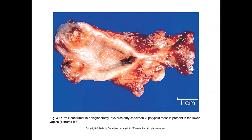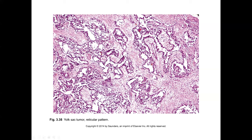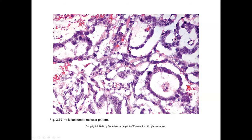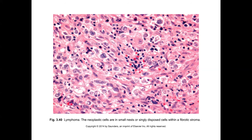Another pediatric tumor that can occur in the vagina is the yolk sac tumor. The morphologies are similar to those seen elsewhere in the gynecologic tract. The reticular pattern features varied cystic spaces with interlacing neoplastic cells bridging and lining those spaces. Characteristic hyaline droplets are typical of this tumor. The Schiller-Duval body does not have to be seen to make the diagnosis; immunohistochemical markers can help, and other variants may also be seen.